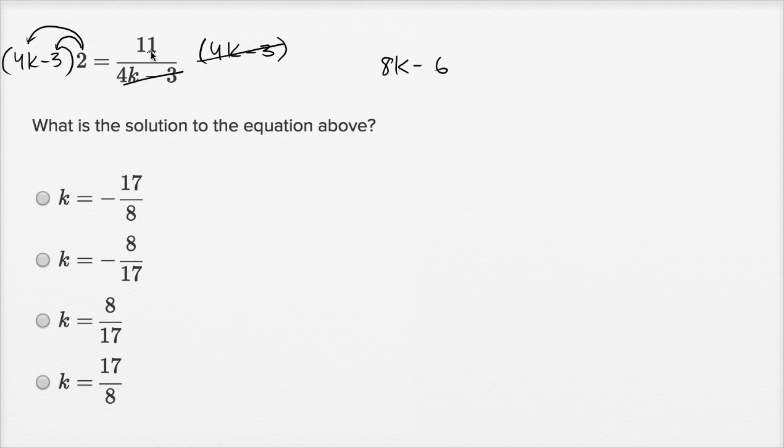So eight k minus six is equal to, well, all we're left with is 11 over one, or we could just write 11. And so adding six to both sides, we could add six to both sides.